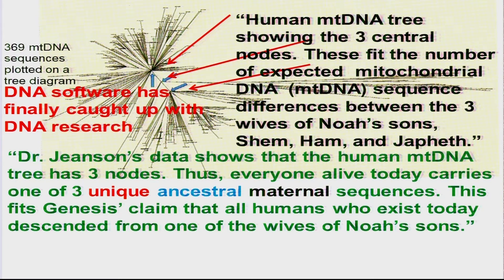Dr. Jensen's data — he was the lead scientist — shows that the human mitochondrial DNA tree has three nodes. Thus, everyone alive today carries one of three unique ancestral maternal sequences. Coming through the female line, they have a unique genetic blueprint — even twins are not exactly alike. This fits Genesis' claim that all humans who exist today descended from one of the wives of Noah's sons.